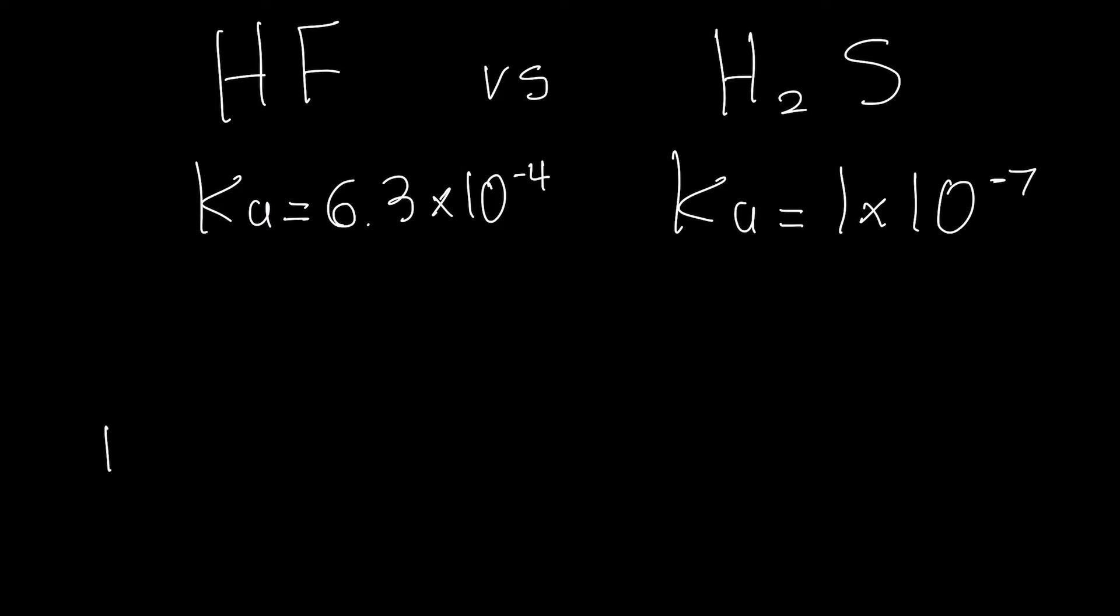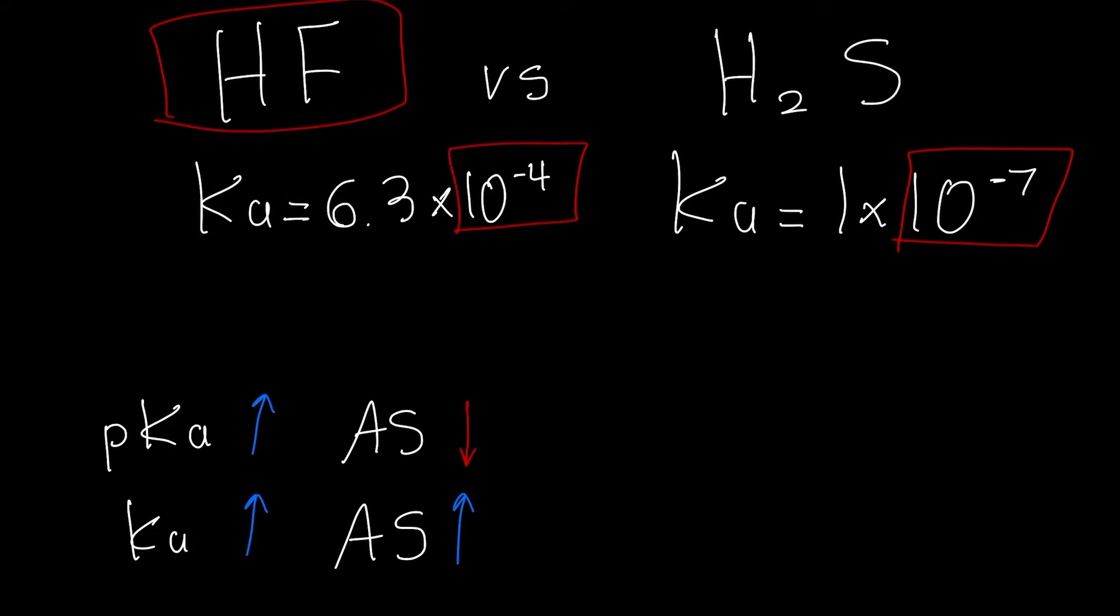Now what you need to understand is that as pKa goes up the acid strength goes down, but for Ka as Ka goes up the acid strength is going to go up with it. So it's a direct relationship between acid strength and Ka and an inverse between pKa and acid strength. So the stronger one in this case is hydrofluoric acid since 10 to the negative 7th is significantly smaller than 10 to the negative 4th.